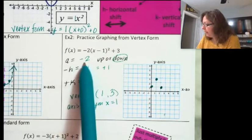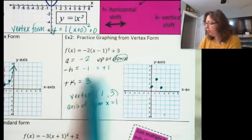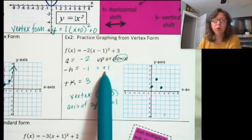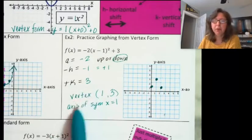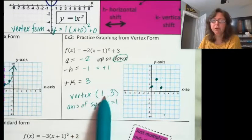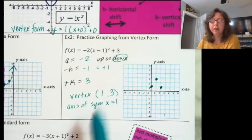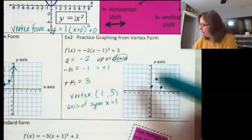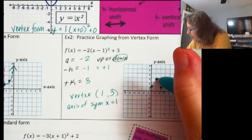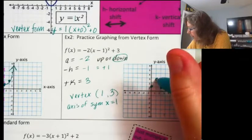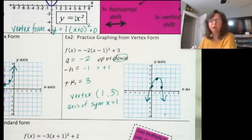Welcome back. My a value is a negative 2, which means it's going to go down. The h value — I needed to change the sign — is a positive 1, so it will have a horizontal shift of positive 1. And then the k value will be positive 3. So the vertex is at (1, 3). My axis of symmetry is at x equals 1. From the vertex, I went over 1 and down 2, over 1 and down 2, and then connected these with a curve.